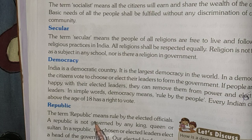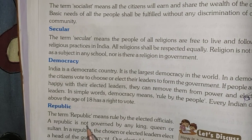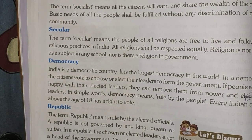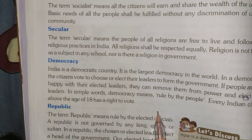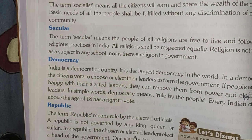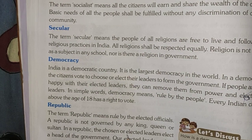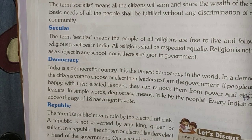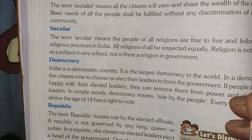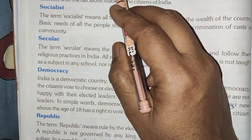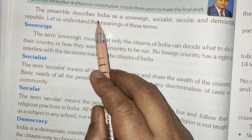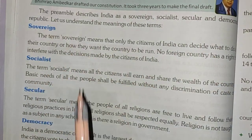Next comes republic. The term republic means rule by elected officials. A republic is a form of government in which the people elect or choose their leaders. They also elect other people called representatives to make laws. So students, I have discussed all of this — what is there in our preamble about the sovereign, socialist, secular, democratic republic.